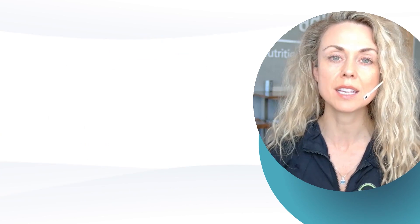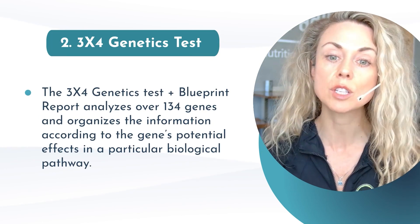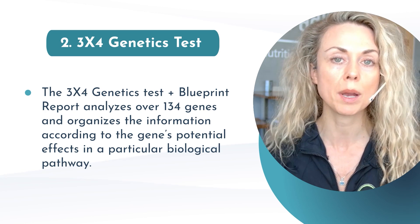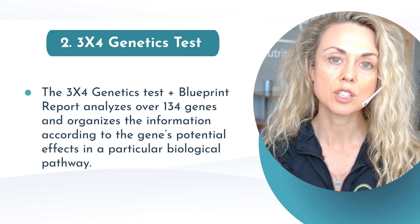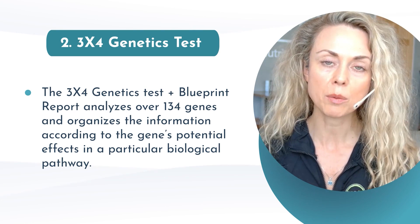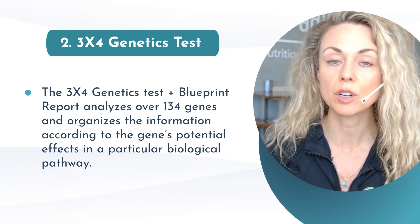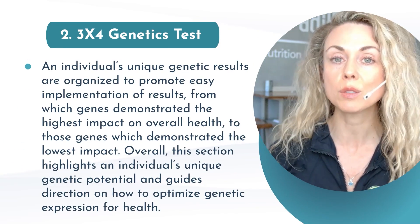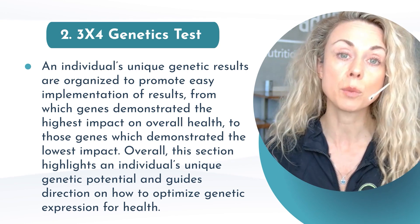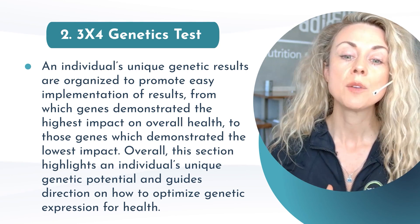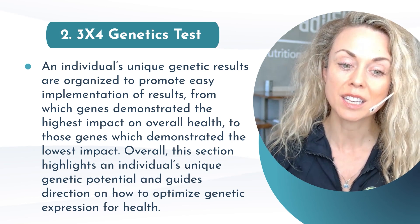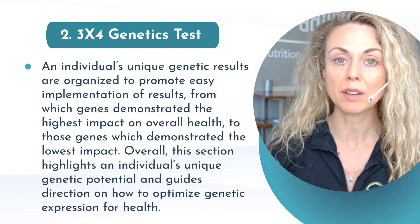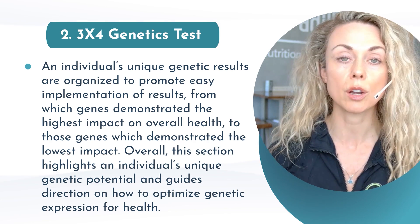The next test is a genetic test — the 3x4 Genetics test and blueprint — which is extremely valuable. It analyzes over 134 different genes and organizes information by each gene's potential effect on a particular biological pathway. Collecting data on genetic SNPs helps us look at how pathways are affected and how we can make lifestyle, behavioral, and nutritional changes. As it relates to nitric oxide, we can look at nitric oxide SNPs specifically, as well as others that influence nitric oxide — for example, BH4, where decreased BH4 cofactor availability leads to NOS dysfunction, reactive oxygen species, and reduced nitric oxide levels.